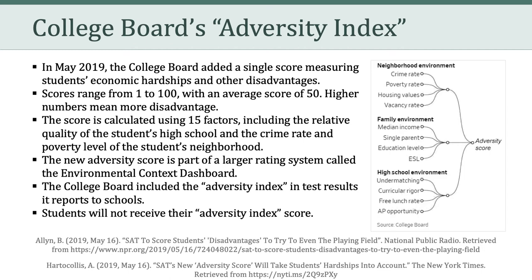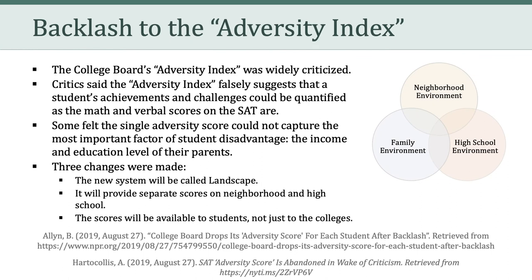The CEO of the College Board argued in a press release that the dashboard is designed to shine a light on students who have demonstrated remarkable resourcefulness to overcome challenges and achieve more with less. It enables colleges to witness the strengths of students in a huge swath of America who would otherwise be overlooked. However, the College Board's Adversity Index was widely criticized. Critics said that it falsely suggested that a student's achievements and challenges could be quantified as if it were a math or a verbal score. Some felt that a single adversity score could not capture the most important factor of student disadvantage — the income and education level of their parents. For that reason, the College Board made three changes. First, they renamed it — it's no longer called the Adversity Index, it's called Landscape. It's now going to provide separate scores on neighborhood and high school, and the scores are now going to be available to students, not just the colleges.